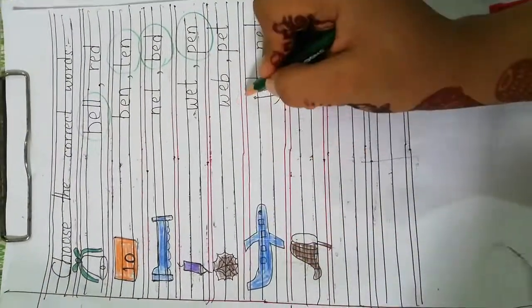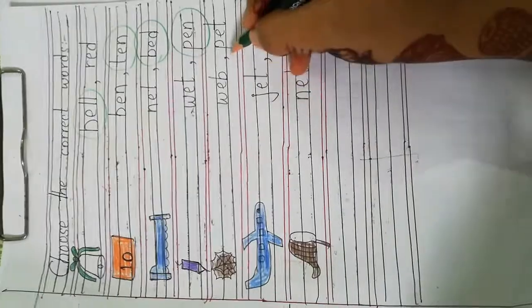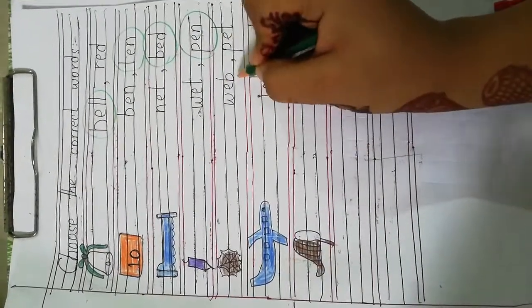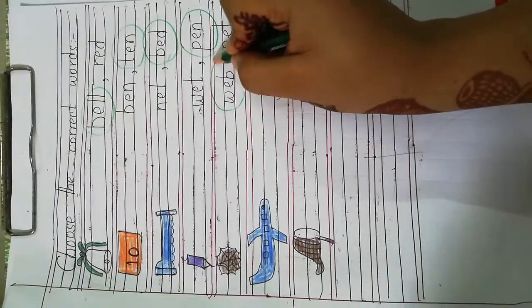Web. W E B web. Pet. Web. So, we will circle this word. W E B web.